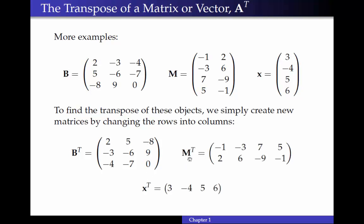And the same is true for M transpose, which is now 2 by 4, and X transpose. If X is a column vector, then X transpose is a row vector.